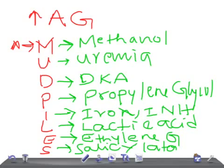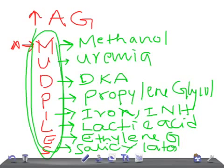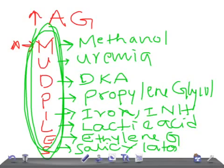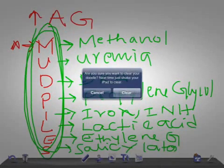Remember, in increased anion gap with metabolic acidosis and compensation, you find the pH is less than 7.4 but the PCO2 is less than 40. Memorize MUDPILES: Methanol, Uremia, DKA (diabetic ketoacidosis), Propylene glycol, Iron therapy or INH therapy, Lactic acidosis, Ethylene glycol, and Salicylates.